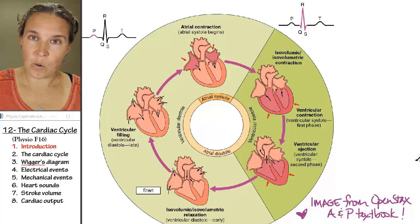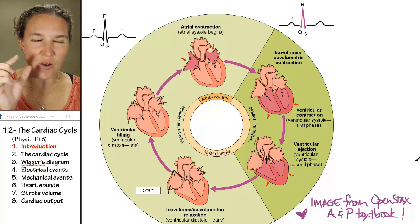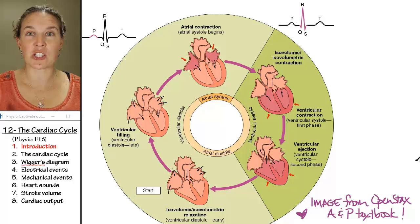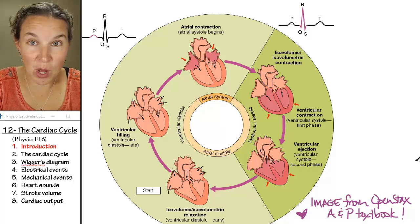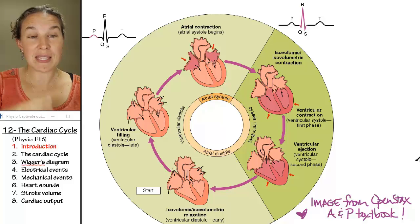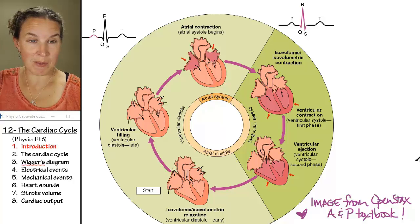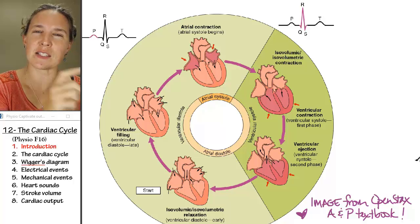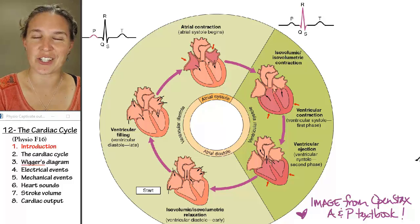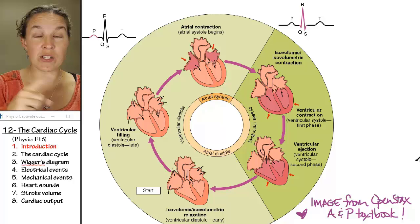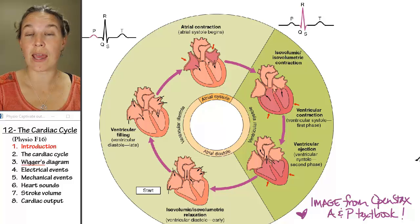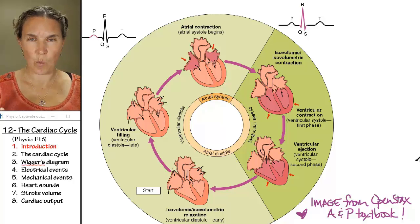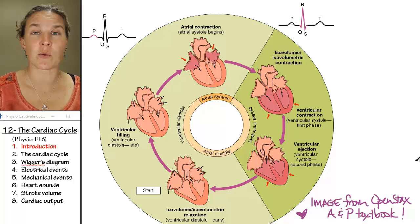In this lecture, we're going to take that information — all those little cellular details — and zoom out to look at the big picture. I tend to be a small-part to big-part thinker, but this big-picture thinking might actually be really helpful for understanding the small bits from the last lecture. We're going to start by looking at the cardiac cycle as a whole — basically one heartbeat and all the events that take place in one heartbeat.